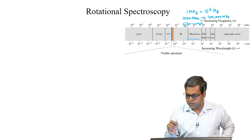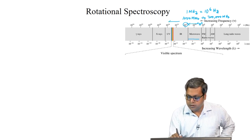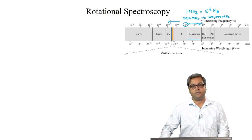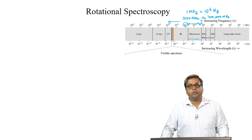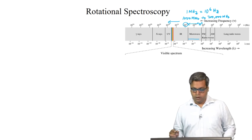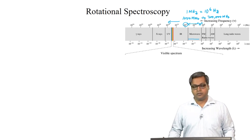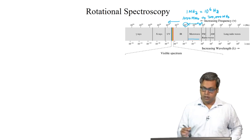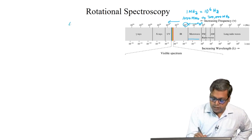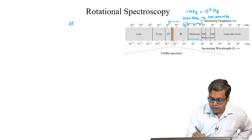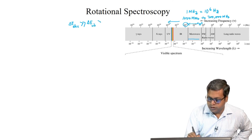In this electromagnetic spectrum, the frequency is increasing towards the left. As we have also discussed before, for different transitions like electronic, rotational, and vibrational, delta E electronic is much greater than delta E vibrational, which is much greater than delta E rotational.